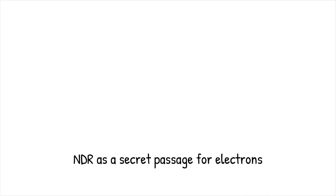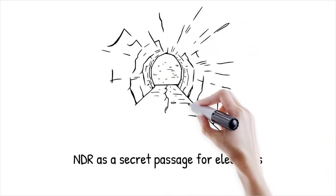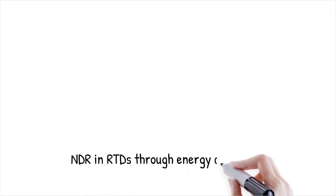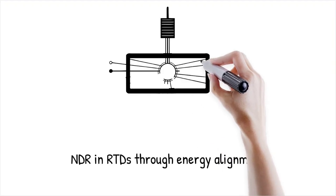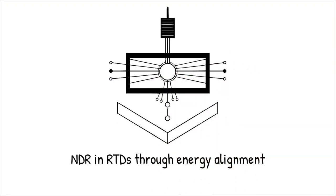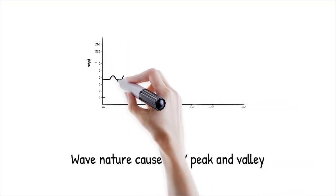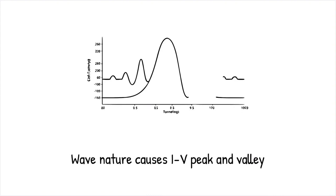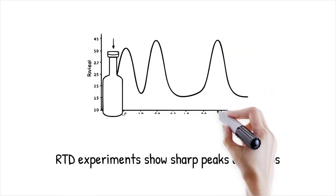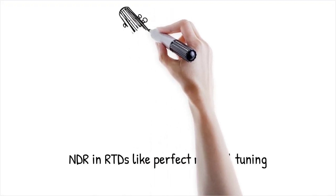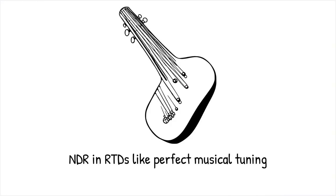This phenomenon is like a secret passage that only opens when conditions are just right — if the conditions shift even slightly, the passage closes and fewer people can get through. RTDs display NDR when the quantum well's discrete energy levels align perfectly with the energy of incoming electrons, allowing a surge in current that abruptly falls off as the alignment is lost. In laboratory experiments, RTDs exhibit a sharp peak current followed by a rapid drop as the applied voltage shifts away from the resonant condition. This behavior is similar to tuning a musical instrument: if the pitch shifts even slightly, the harmony is lost and the sound level decreases dramatically.